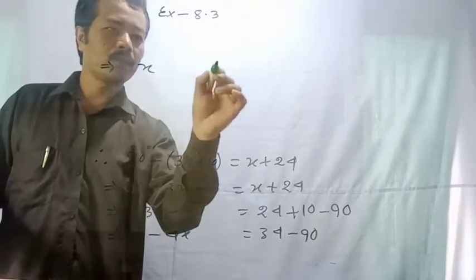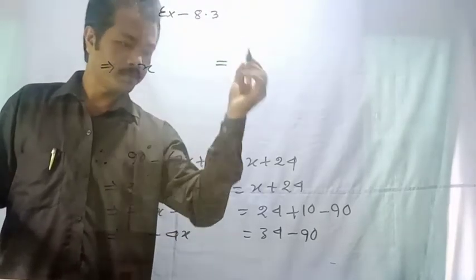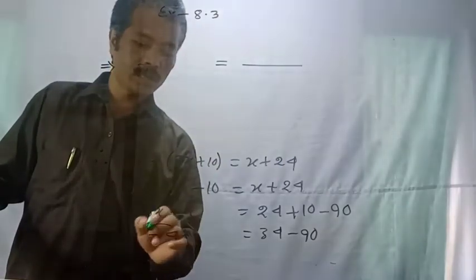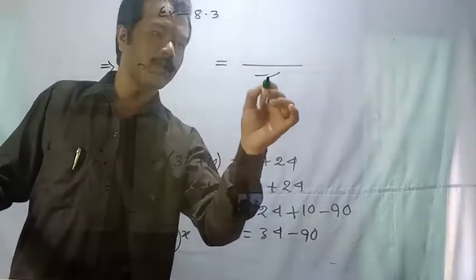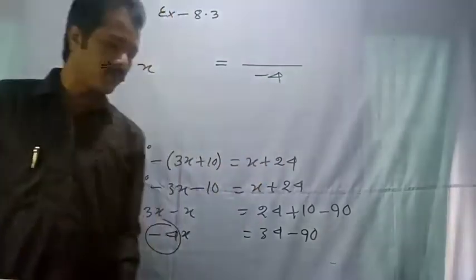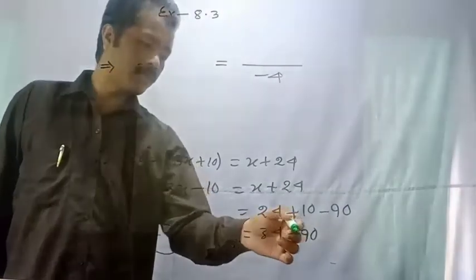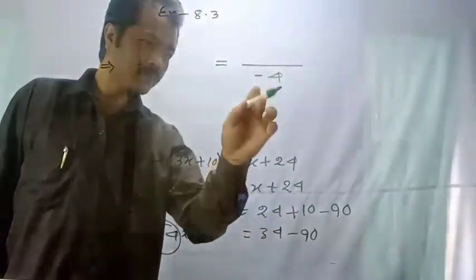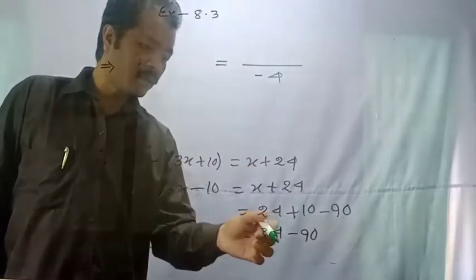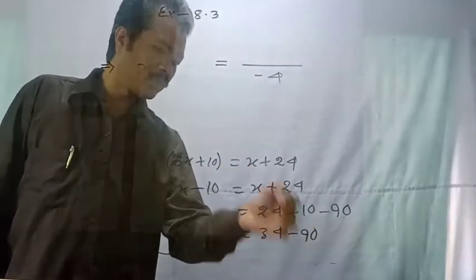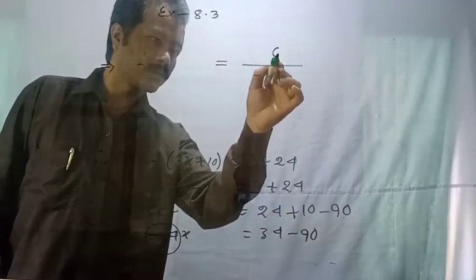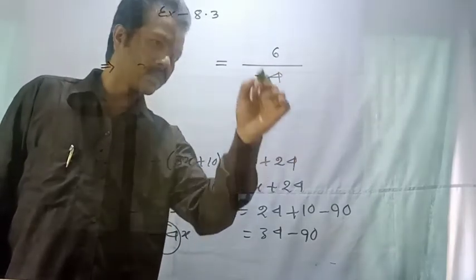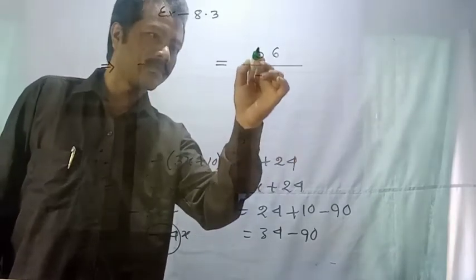So only x equals 2. Minus 4. 90. 34 minus 4. 90. 90. 56.